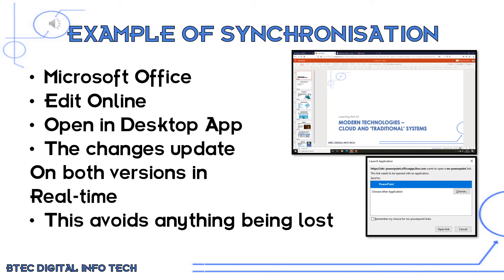An example of where you might use synchronization is exactly now as we speak. I am making this video online and I've gone onto my OneDrive where I've saved this file in Microsoft Office. I'm editing it online, but then I think it's going to be a lot easier to insert audio on the offline version, so I click on Edit in Desktop App. Any changes that I make on the PowerPoint version automatically update in the online version as well. This stops anything being lost, and if anybody else tries to edit the online version, it makes sure that it's constantly up to date.